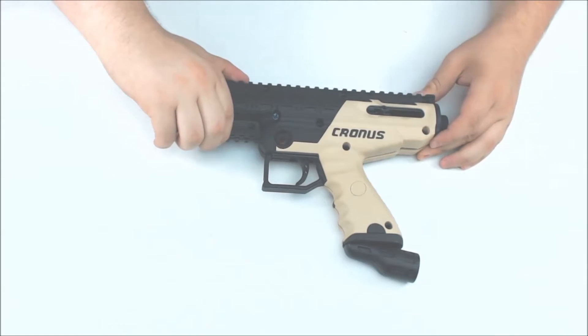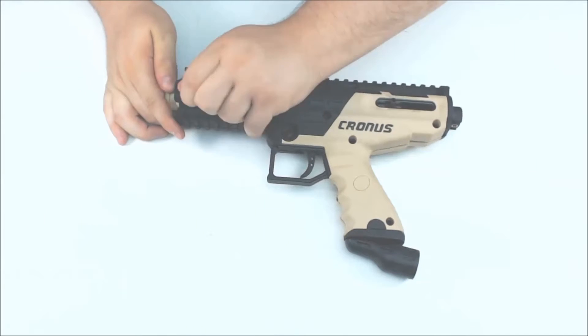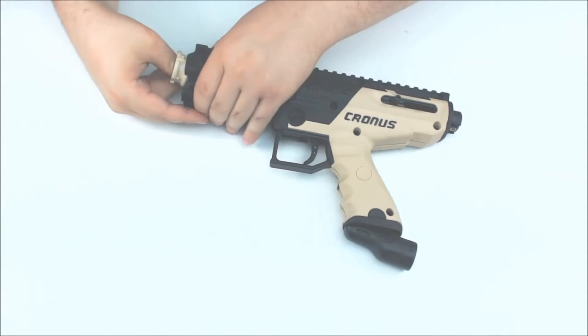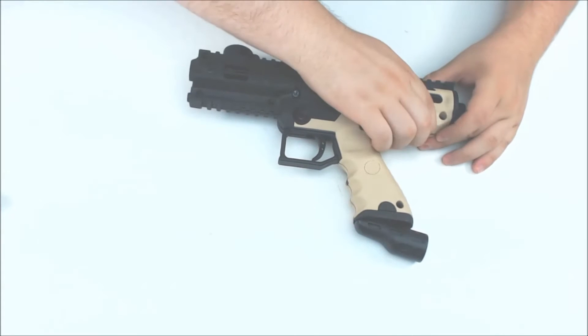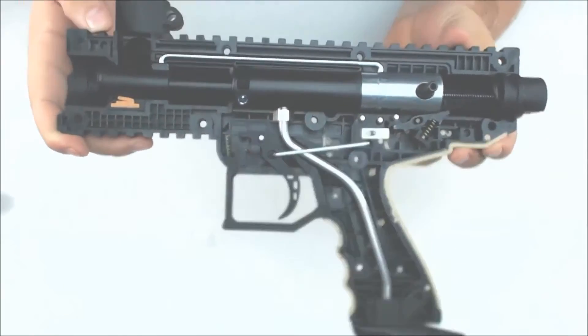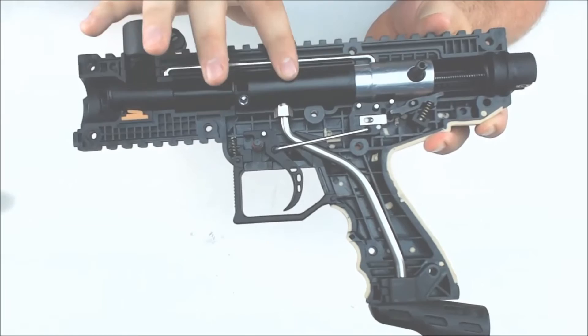To replace the power tube, we're going to need to pull the receivers apart. It's kind of difficult sometimes. All righty. So now we have the inside of the Cronus. What we're trying to replace is the power tube, which is this black plastic piece right here.